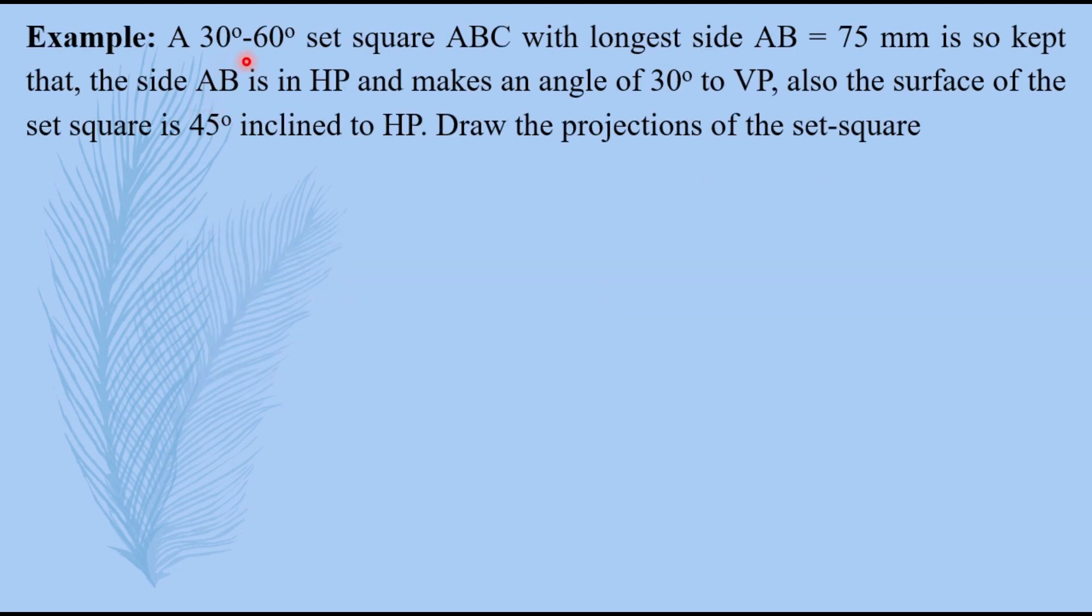A 30 degree 60 degree set square ABC with longest side AB equals to 75 mm is so kept that the side AB is in HP and makes an angle of 30 degrees to VP. Also the surface of the set square is 45 degrees inclined to HP. Draw the projections of the set square.